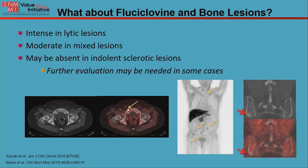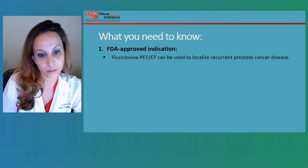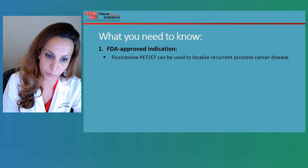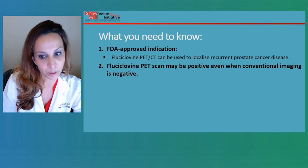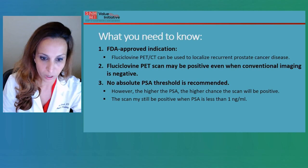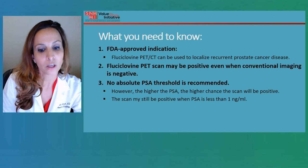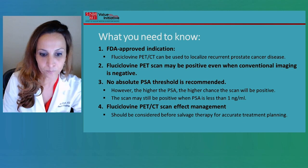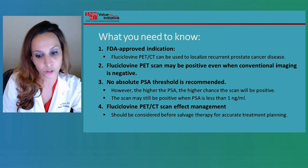So what do you need to know? Number one: the FDA-approved indication is for recurrent disease, to localize areas of disease for patients who already had prior treatment and now have an increasing PSA. Number two: fluciclovin PET can be positive when conventional imaging such as CT and MRI is negative. Number three: there is no absolute PSA threshold to obtain the scan — the higher the PSA, the higher the chance the scan will be positive, but the scan may actually be positive when PSA is less than one. And last: fluciclovin PET-CT can affect management and should be considered before salvage therapy for accurate treatment planning.